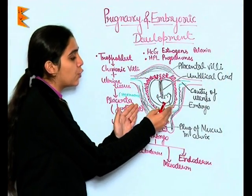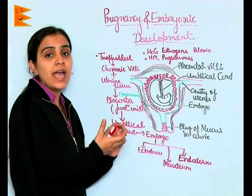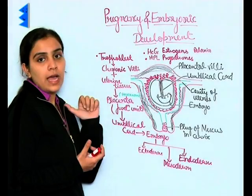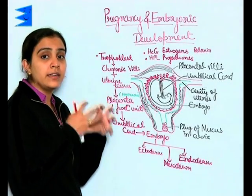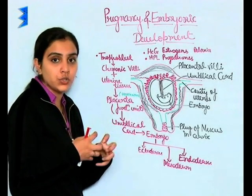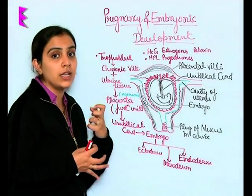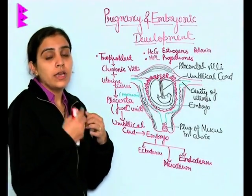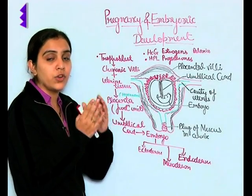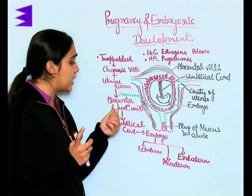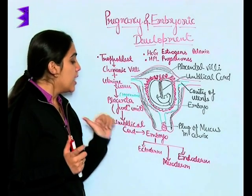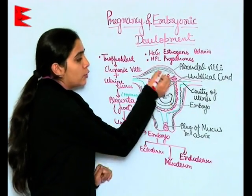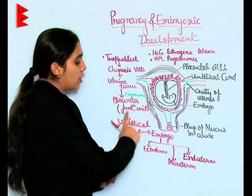The outer layer trophoblast develops villi which are projections known as chorionic villi. These villi are interdigitated with uterine tissue and form a functional unit which helps in transport of hormones across the embryo and mother. Placenta is formed, and this placenta is attached from the embryo to the mother through the umbilical cord.